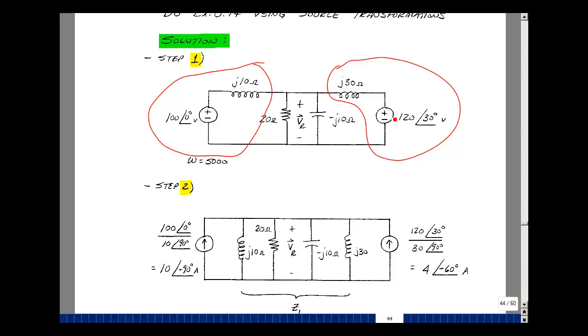Over here, we'll take the 120 at angle 30 and divide it by J30, which is just 30 at angle 90. So that ratio is 4. 30 minus 90 is minus 60. So now we're going to solve for the voltage across here.